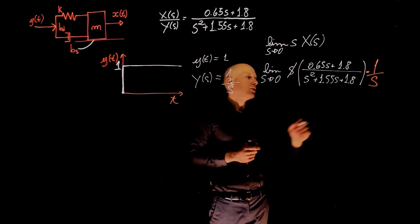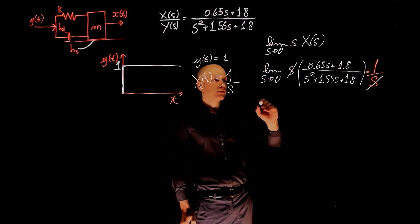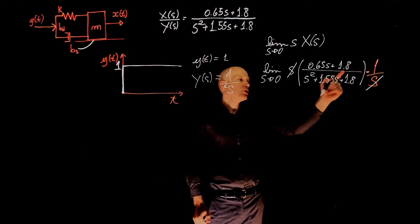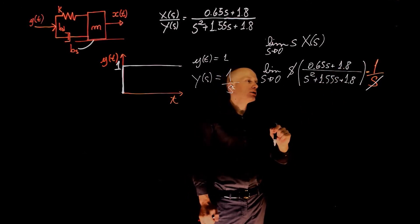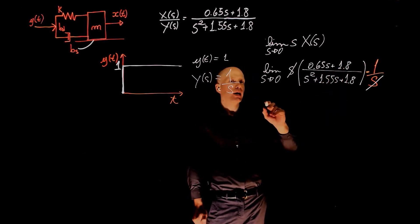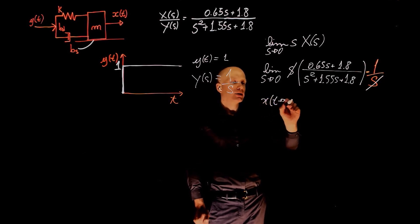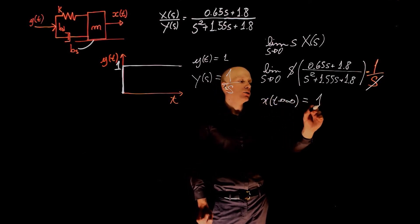This s from the theorem cancels the step input. And when s tends to 0, we are left with 1 over 8, 1.8 divided by 1.8. The final value, or x when t tends to infinity, is equal to 1.